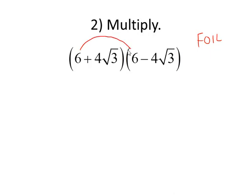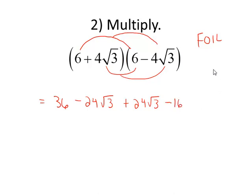First times first, 6 times 6 is 36. 6 times negative 4 square root of 3 is minus 24 square root of 3. 4 square root of 3 times 6 is positive 24 square root of 3. And then finally, 4 square root of 3 times negative 4 square root of 3. Multiply the numbers on the outside first, that's going to be negative 16. And then we're going to use the fact that the square root of n times the square root of n is equal to n whenever n is non-negative. So the square root of 3 times the square root of 3 ends up being simply 3.